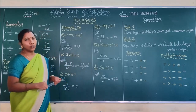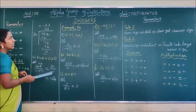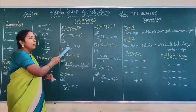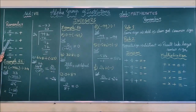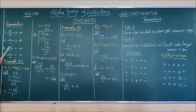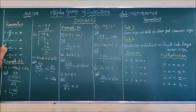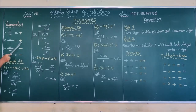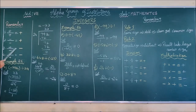Now we are going to see some examples based on division. Before seeing the division sums, let us revise the rules for division. Plus divided by plus equals plus. Minus divided by minus equals plus. Plus divided by minus equals minus. Minus divided by plus equals minus. That is: if the numerator and denominator have the same sign, the result is plus. If they have opposite signs, the result is minus.